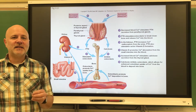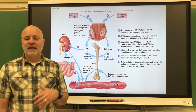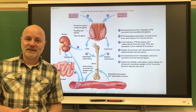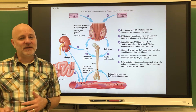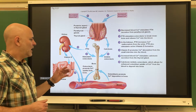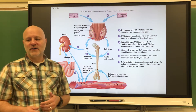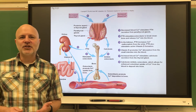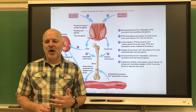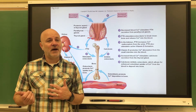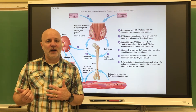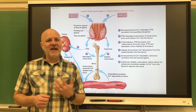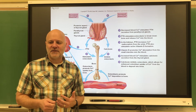The parathyroid glands are small glands found on the thyroid gland. They produce parathyroid hormone, which has the opposite effects of calcitonin — it stimulates bone breakdown by stimulating osteoclasts and inhibiting osteoblasts. Other hormones associated with bone are sex hormones.